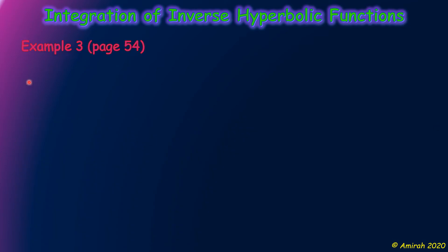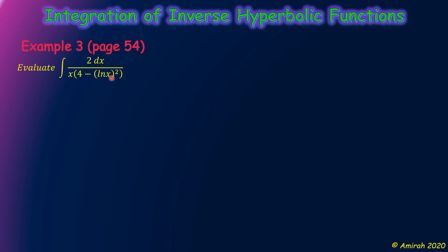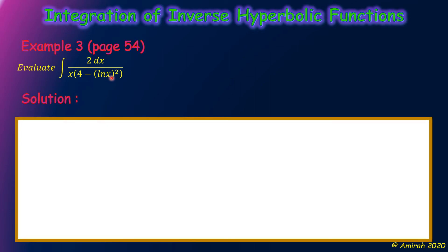Now, how about Example 3 on page 54, chapter 2 in your handout? Evaluate the integration of 2dx over x times (4 minus (ln x)²).